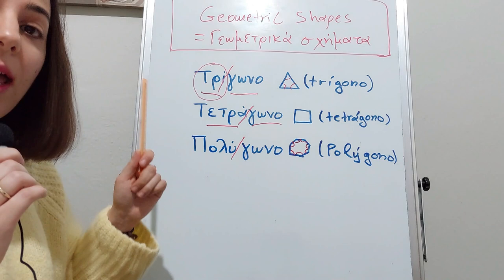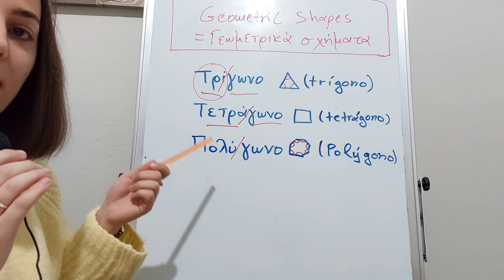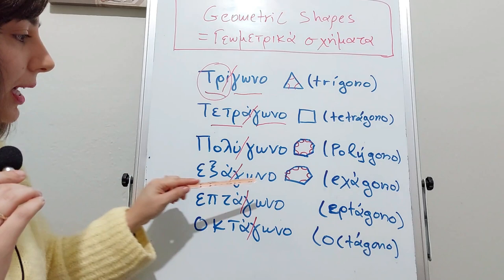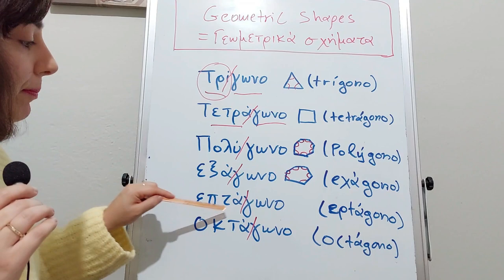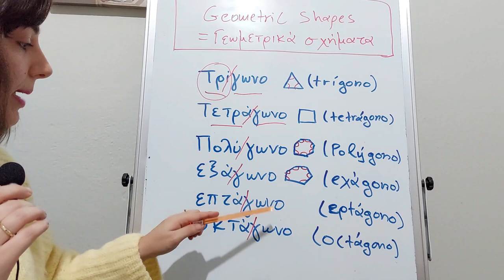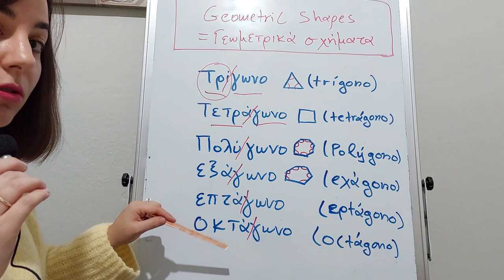Let's see them. Εξάγωνο has six angles. This denotes the number six. The number seven is επτάγωνο - seven angles. And eight angles is οκτάγωνο.